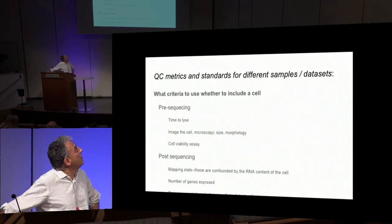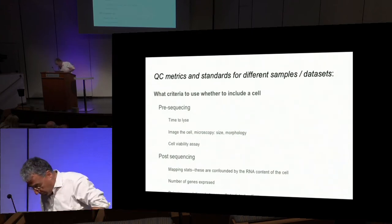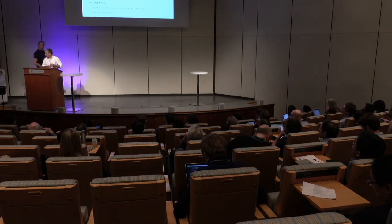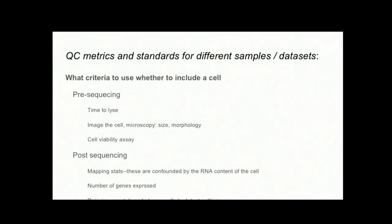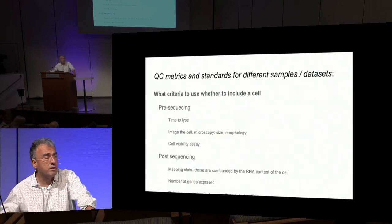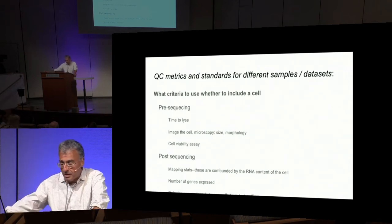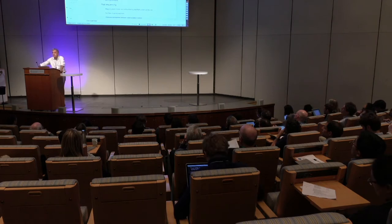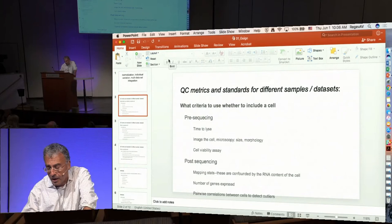The time to rise of the cell, imaging the cell — so how the cell looks using microscopy or cell viability assays. Then things you could use after sequencing, like mapping statistics, although this could be confounded by the amount of RNA in the cell, the number of genes expressed, and the pairwise correlation between cells to detect outliers — cells that behave unexpectedly.